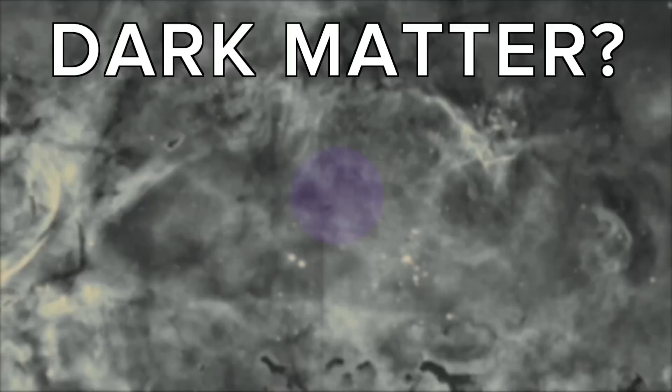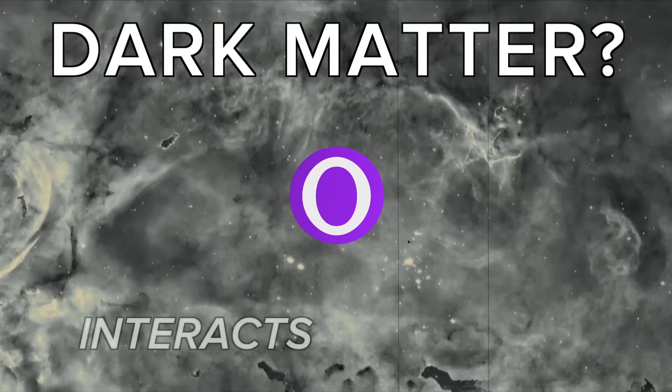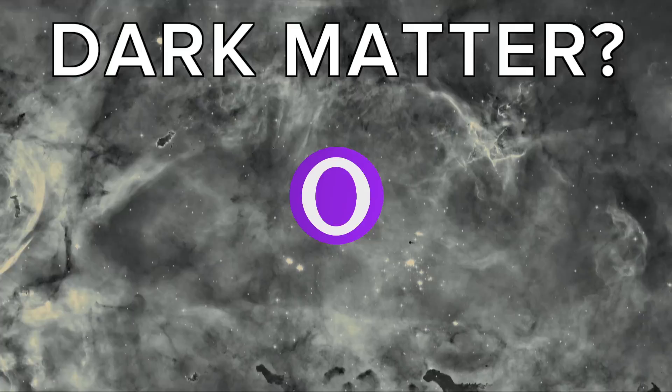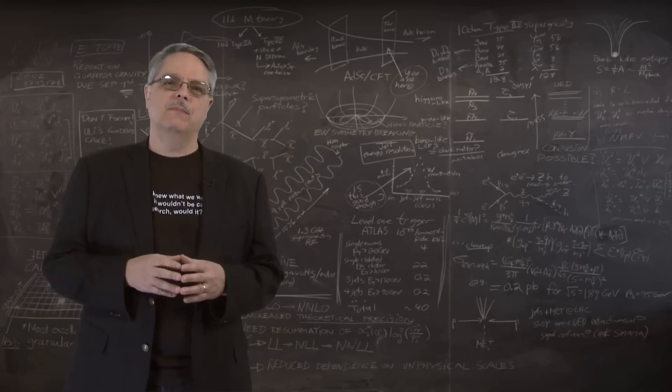The simplest picture that scientists have of dark matter is a subatomic particle with a mass between 1 and 10,000 times the mass of a proton. This particle has no electrical charge and interacts with ordinary matter via gravity and possibly involving forces weaker than we've discovered so far. For this reason, scientists call this particle a WIMP for Weakly Interacting Massive Particle.